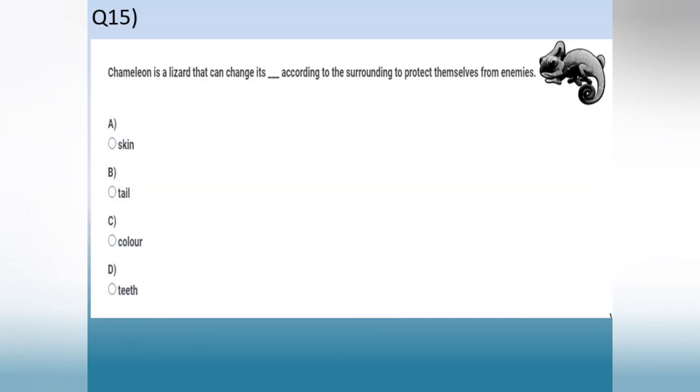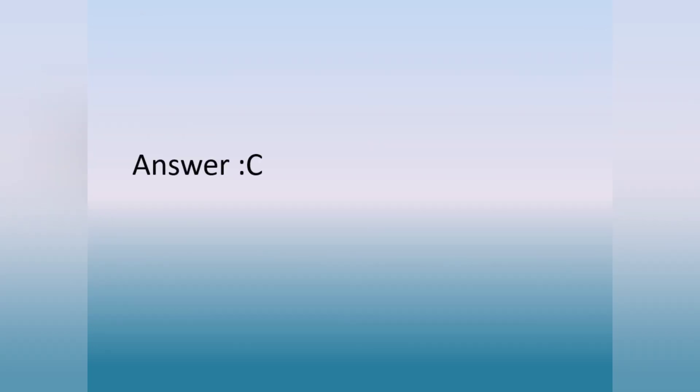Question number 15. Chameleon is a lizard that can change its dash according to the surroundings to protect themselves from enemies. Option A. Skin. Option B. Tail. Option C. Color. Option D. Teeth. The answer is option C, color.